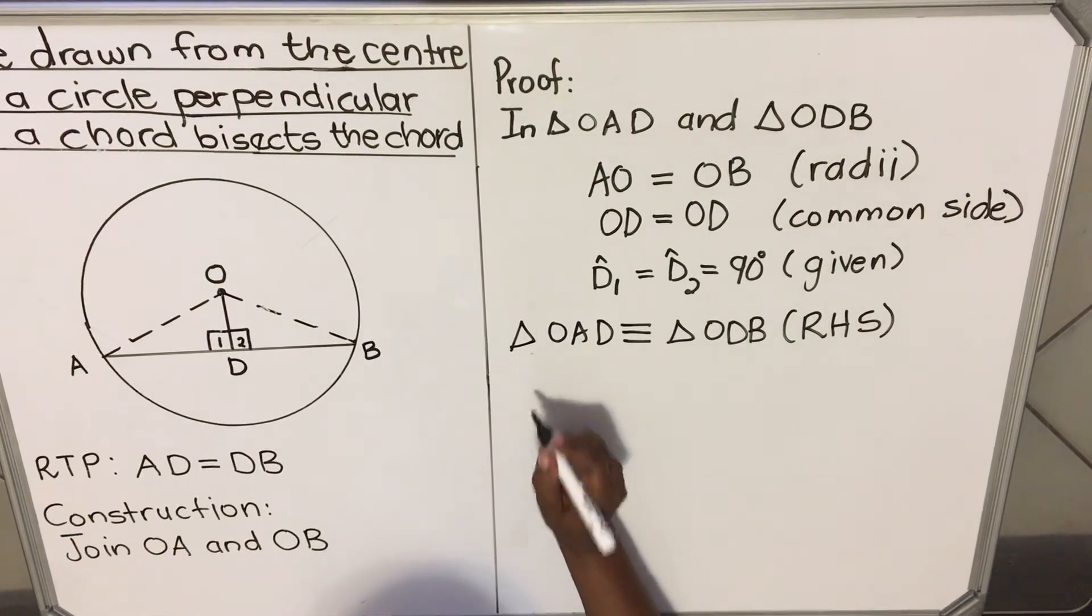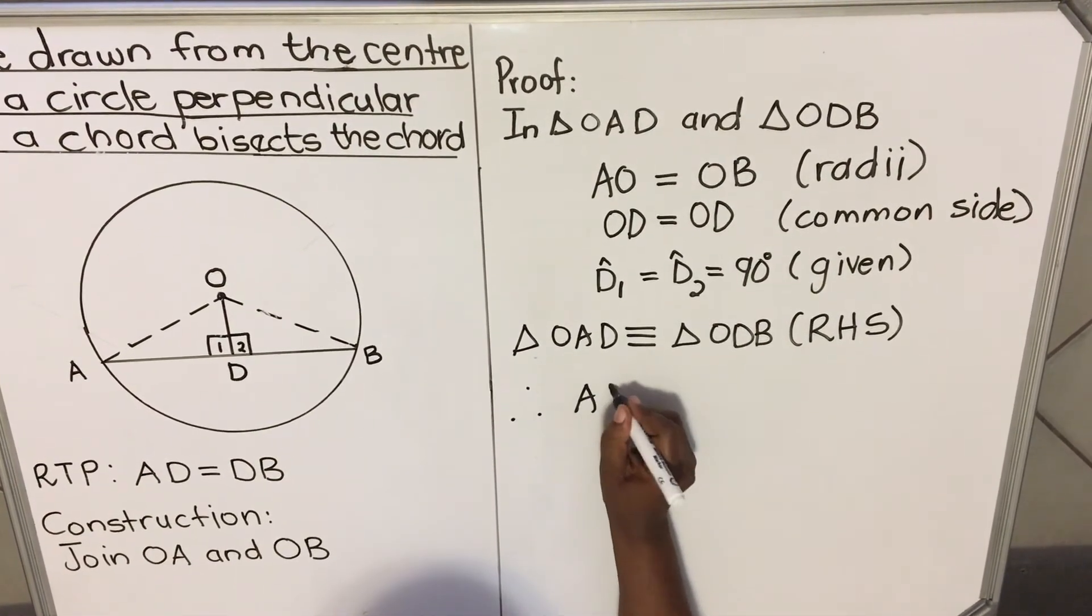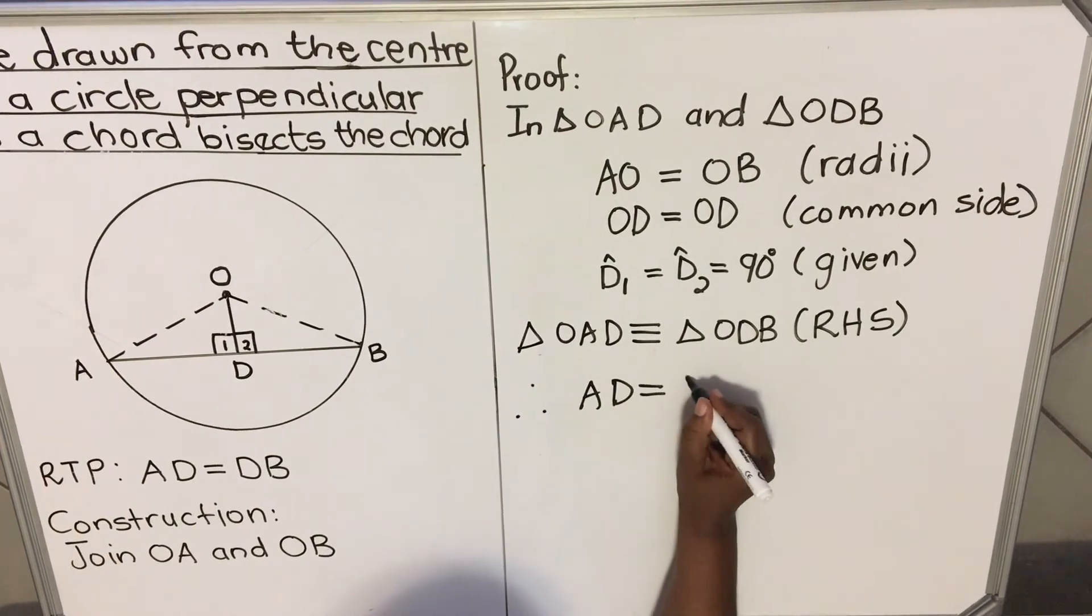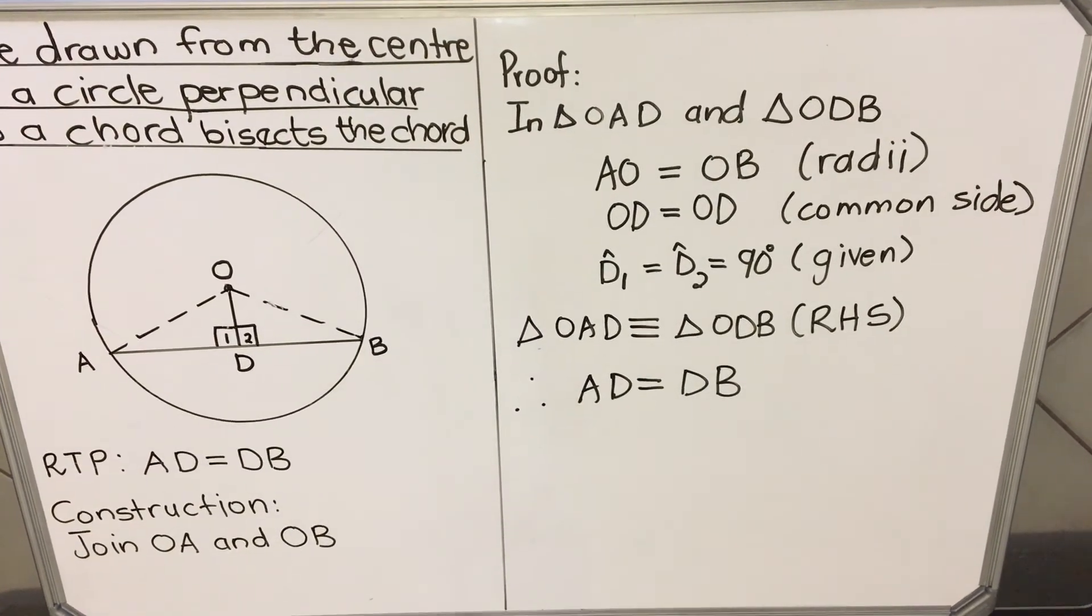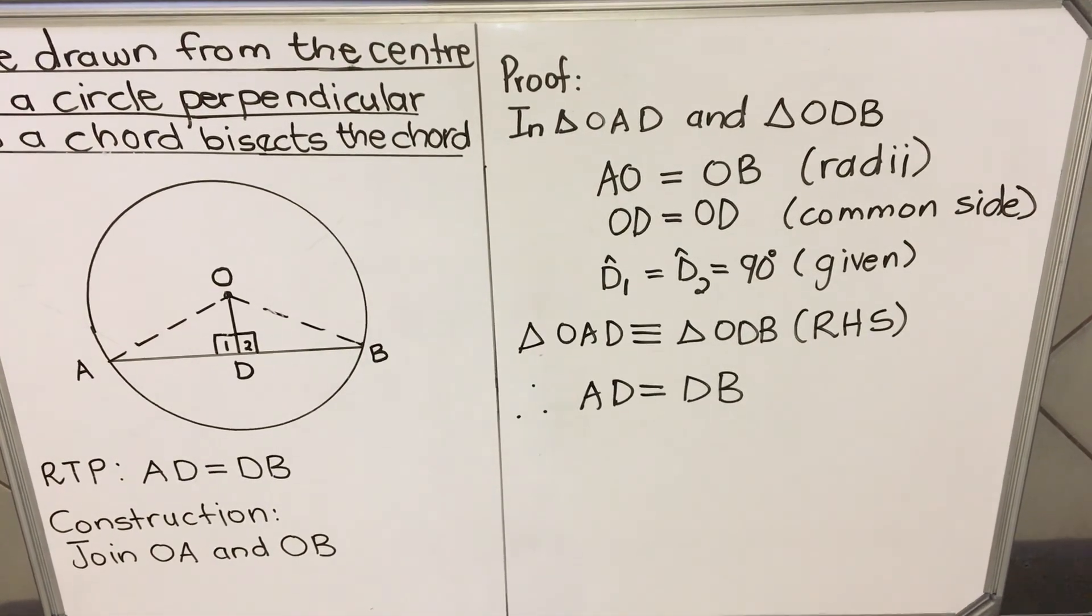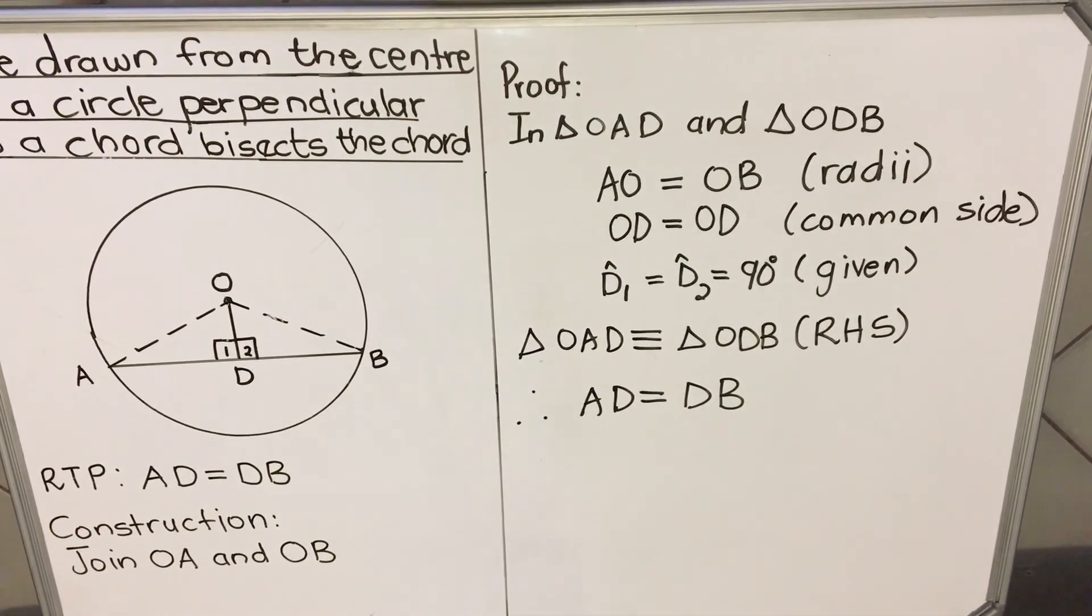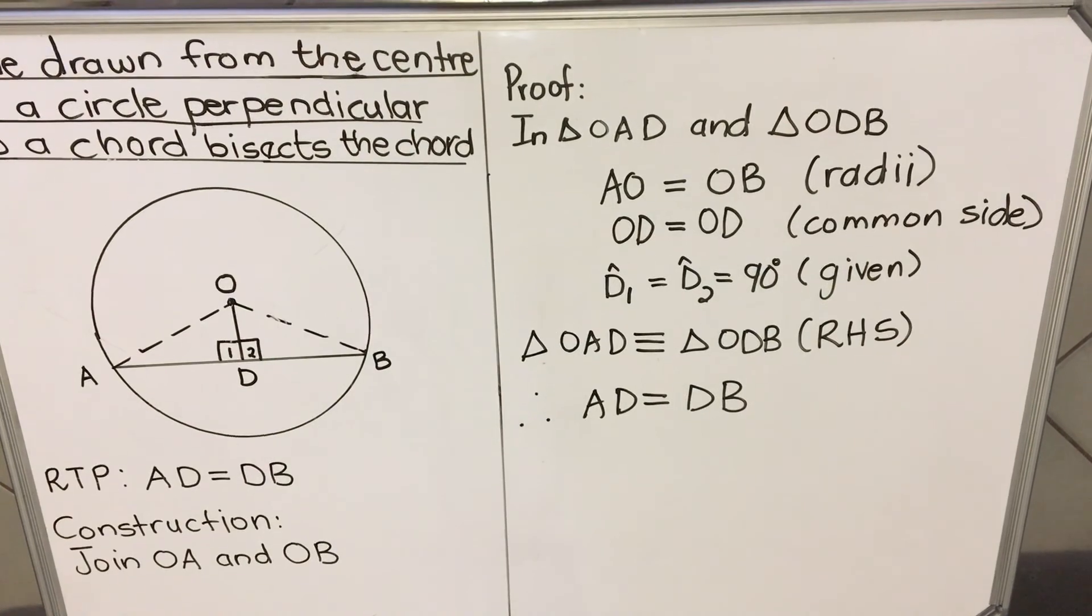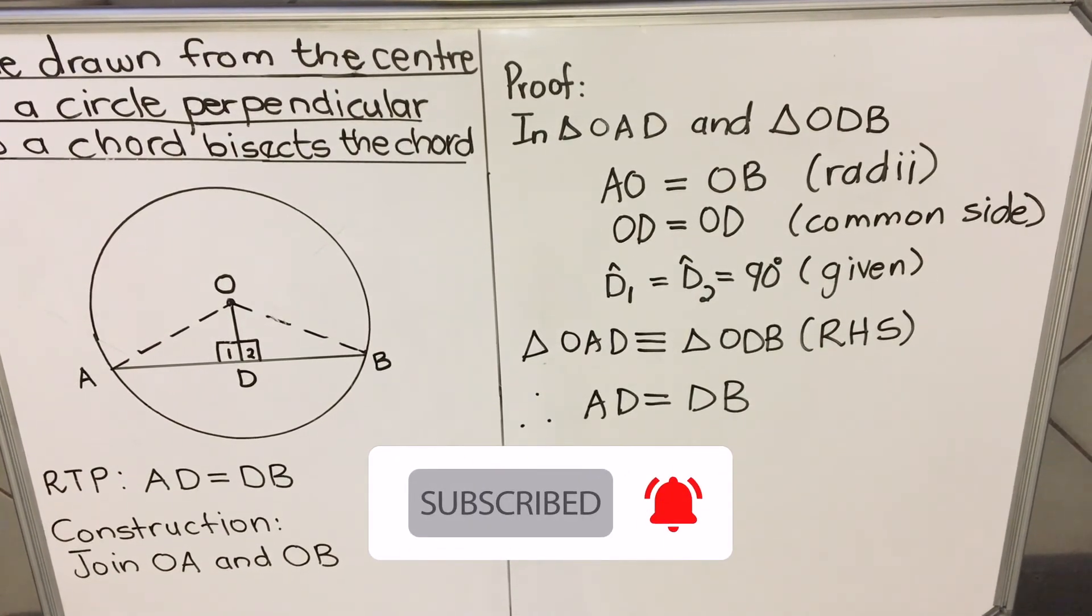If these two triangles are congruent, therefore the lines are equal. Line AD is equal to line DB. So this is how you prove this theorem. This is something that you memorize. And then you get to get five marks if it's as an exam. But the more important part of this theorem is to know how to apply the theorem. So you need to get practice and apply the theorem. That's what will be asked more than the proof. Thank you for watching.